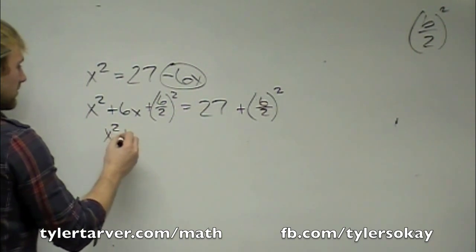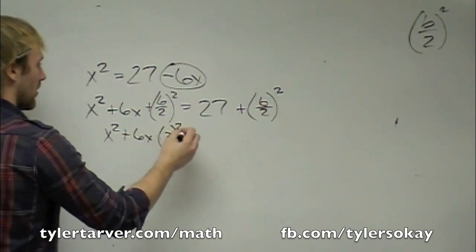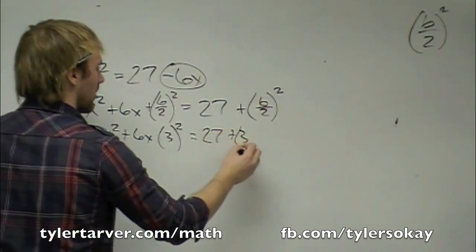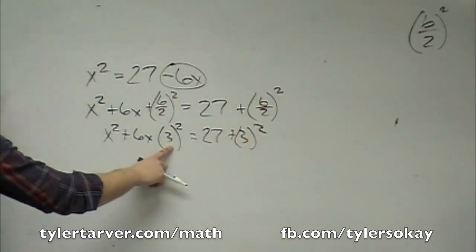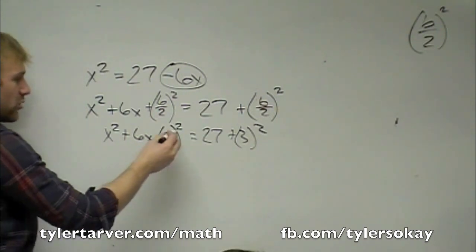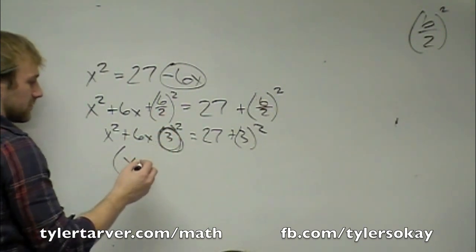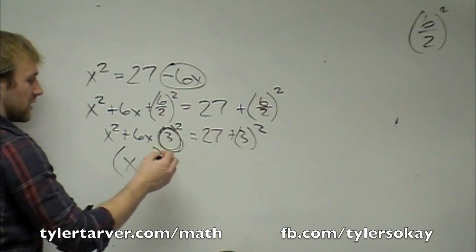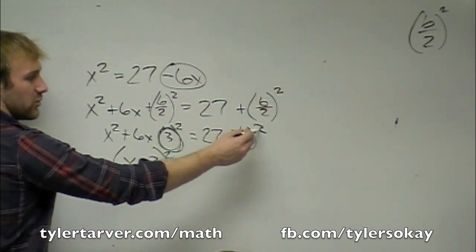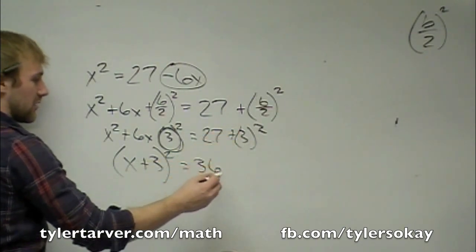6 over 2 is 3. Using the shortcut, it becomes x plus 3 squared. 3 squared is 9. 27 plus 9 is 36. So we have x plus 3 squared equals 36.